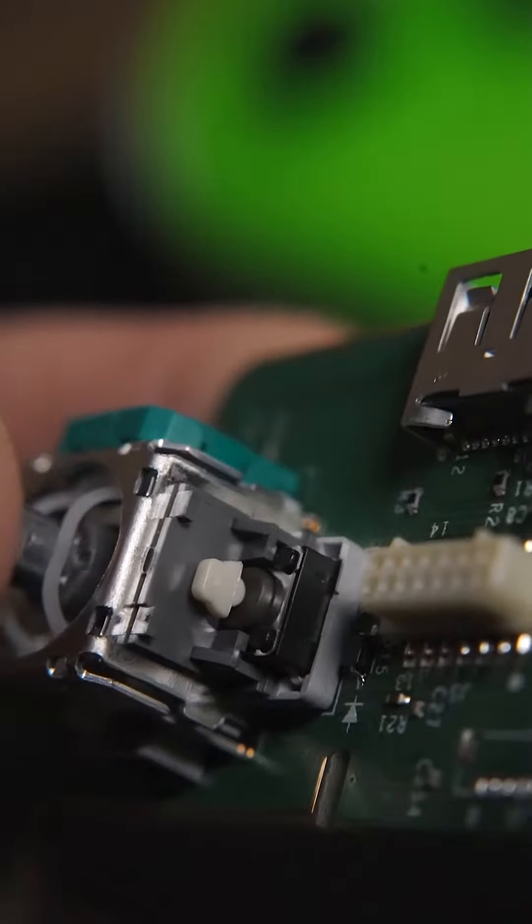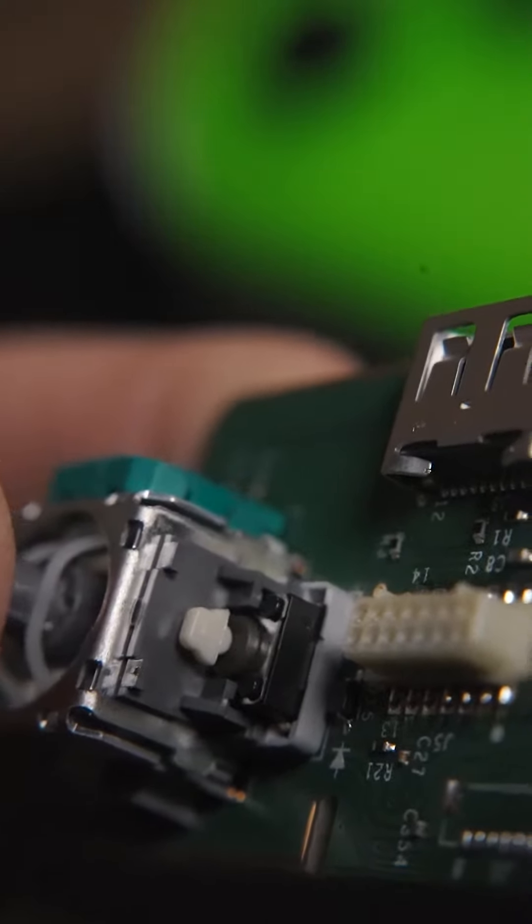This is an Xbox thumbstick module. You can see this little gray frame around it. When you click the thumbstick, this white button moves up and down and clicks the button.